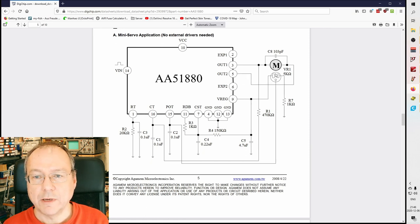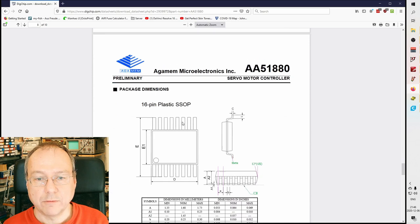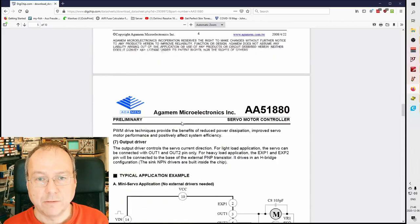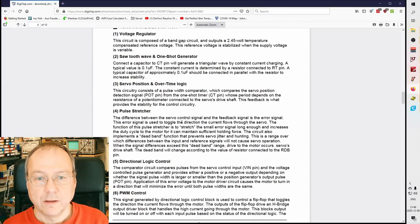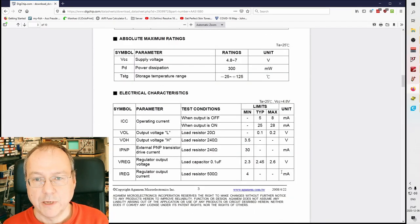This is shown here: we have the motor connected to these two connectors, and this symbol here should be our variable resistor. It says VR variable resistor 5 kilohms, and it's connected between ground on one side and the regulated voltage of the chip itself on the other side. The mid contact goes into a pin which is called POT, like potentiometer.